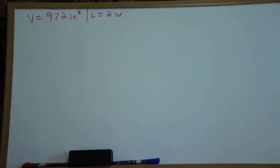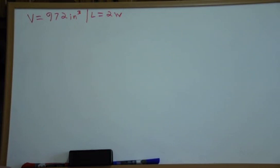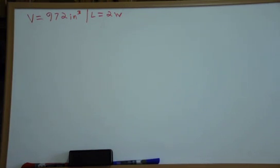Hi everybody. Today we're going to do an optimization problem. This was actually covered by another YouTube user, Interglucal. She did it with a single variable calculus method, and I want to show a different way — the multivariable calculus method. I'm going to use Lagrange multipliers, partial derivatives, and all that.